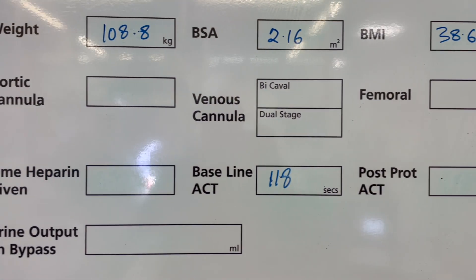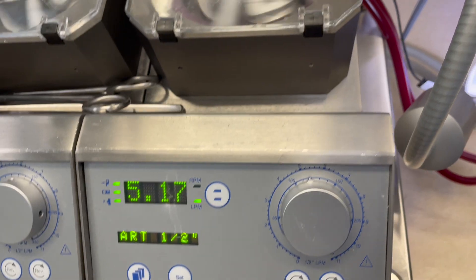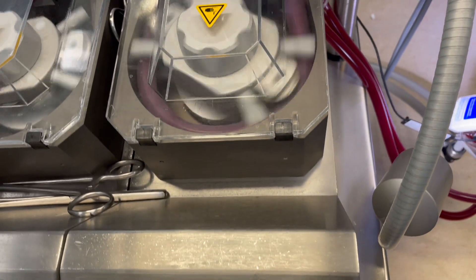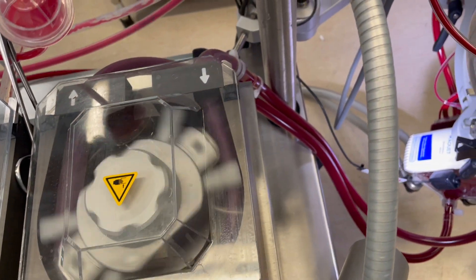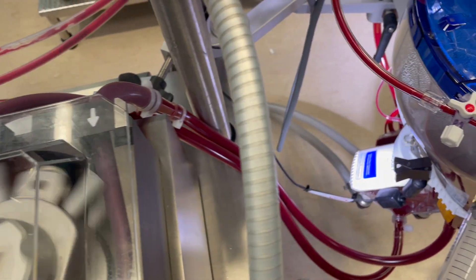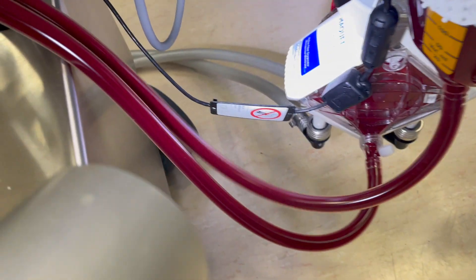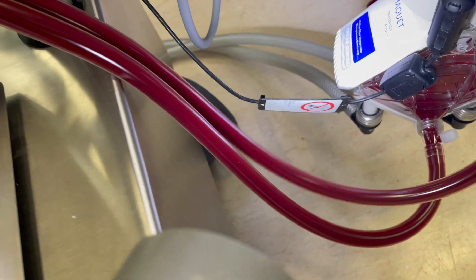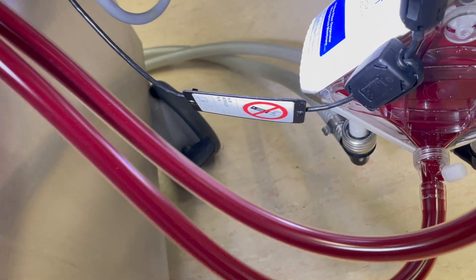Once the flow is generated, it goes into the oxygenator. It looks quite small, but when opened up it contains about 2.5 square metres of membrane condensed into a small housing. That oxygenator works as the lung.